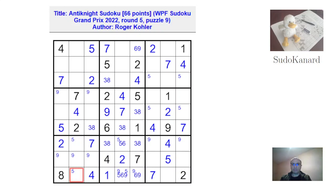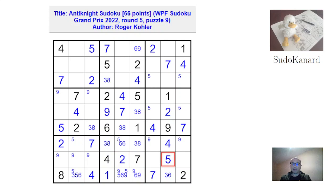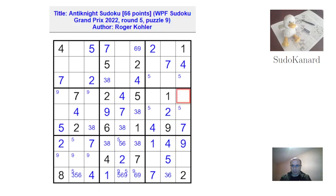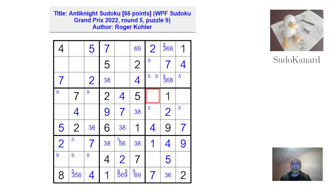Three, six, and eight are the candidates here — actually not eight: three, six, and five are here. In this box, one can only be here. This place is ruled out by this, so it pushes the nine to this cell. Up there we must have a nine somewhere in here. This column is three, six, and eight, and there's actually an eight in one of those. Here the only values are three, six, and eight, and I'm trying to find if I see any kind of elimination.